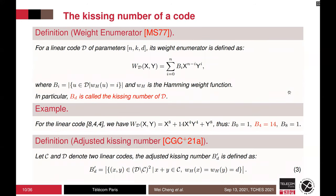A well-known notion is called weight enumerator, which denotes a linear code to a weight polynomial. For linear code D of current n, kd, its weight enumerator is as follows. The coefficient bi is the number of codewords of Hamming weight i. In particular, Bd is called the kissing number of D. For instance, for the linear code [8,4,4], we have B₀ equal to 1, B₄ equal to 14, and B₈ is 1. In addition, we can define the adjusted kissing number of two linear codes C and D. So B'_D is the number of codewords such that the codewords are in code D but not in code C.